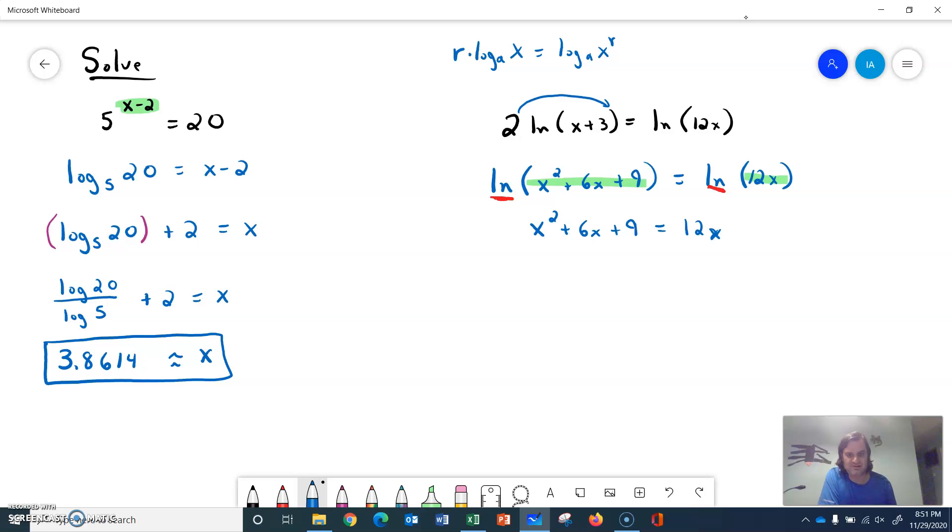So this is a regular quadratic equation. I'll bring everything to one side. x squared minus 6x plus 9 equals 0. And I'll factor into x minus 3 times x minus 3. And if I solve these, they're the same. x minus 3 equals 0. So the answer is x equals 3.